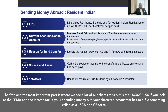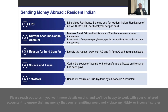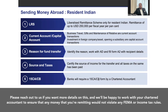The fifth and most important part — where we see a lot of our clients miss out — is the 15CA/CB. Under FEMA and the income tax, if you're sending money out, your chartered accountant has to e-file something called a Form 15CA or 15CB. Please reach out to us if you want more details, and we'll be happy to work with your chartered accountant to ensure that any money you're remitting would not violate any FEMA or income tax rules.